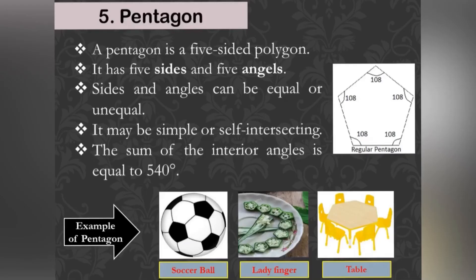Pentagon: A pentagon is a polygon with five edges. It has five sides and five angles. Sides and angles can be equal or unequal. It may be simple or self-intersecting. The sum of the interior angles is equal to 540 degrees.